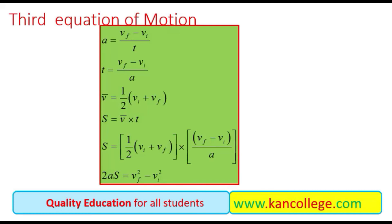Third equation of motion. As discussed, acceleration is (Vf − Vi) / T. From here we can get the value of T by rearranging: T = (Vf − Vi) / a. Average speed is the sum of initial and final speeds divided by 2. Putting the value of average speed and the value of T into the displacement relation, we get the result.